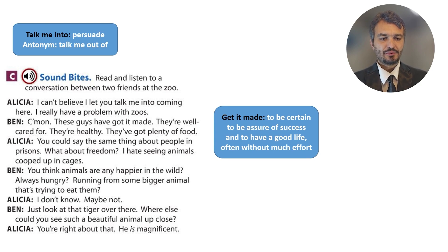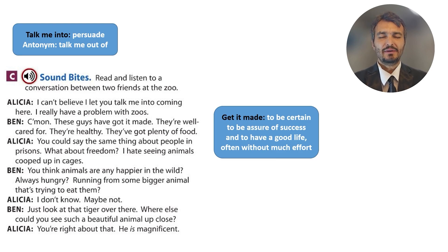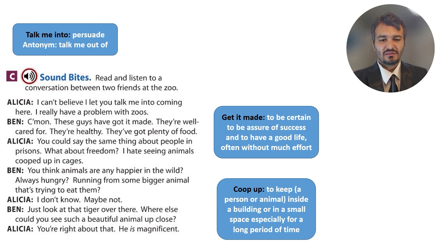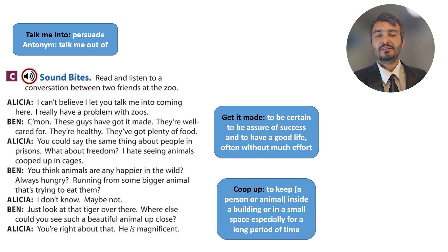Alicia says: 'You could say the same thing about people in prisons — they are healthy, there is no problem, they have plenty of food. But where is the freedom? What about liberty? I hate seeing animals cooped up in cages.' 'Cooped up' is a phrasal verb meaning captured and imprisoned inside a cage or prison. Ben says: 'You think animals are any happier in the wild? Always hungry, fighting for food, running from bigger animals trying to eat them?'